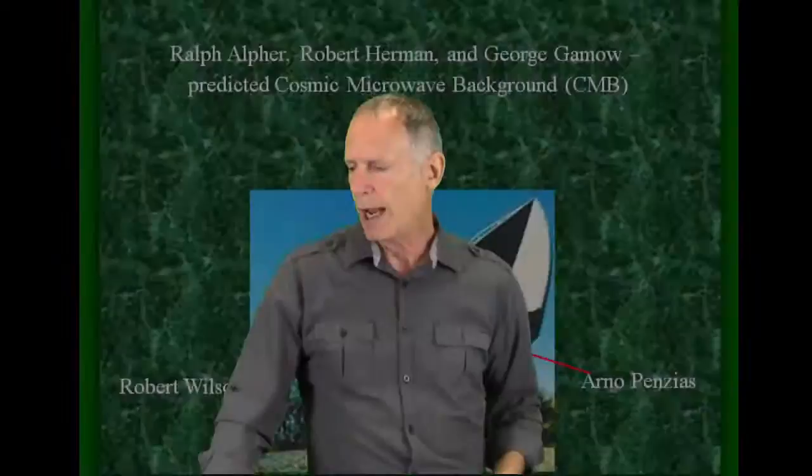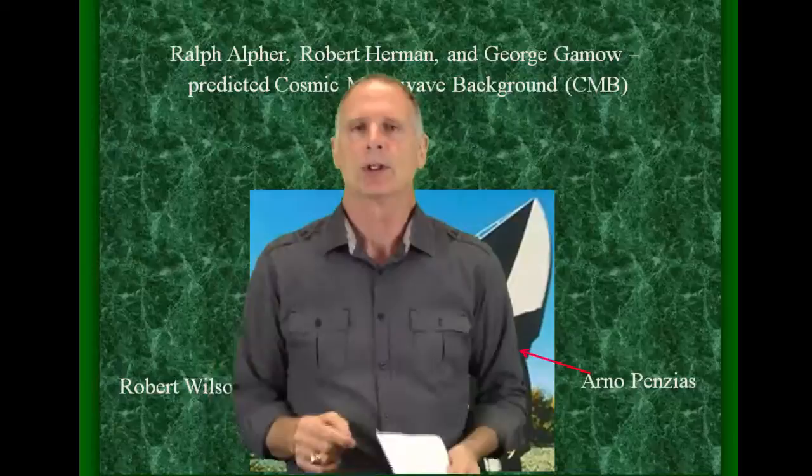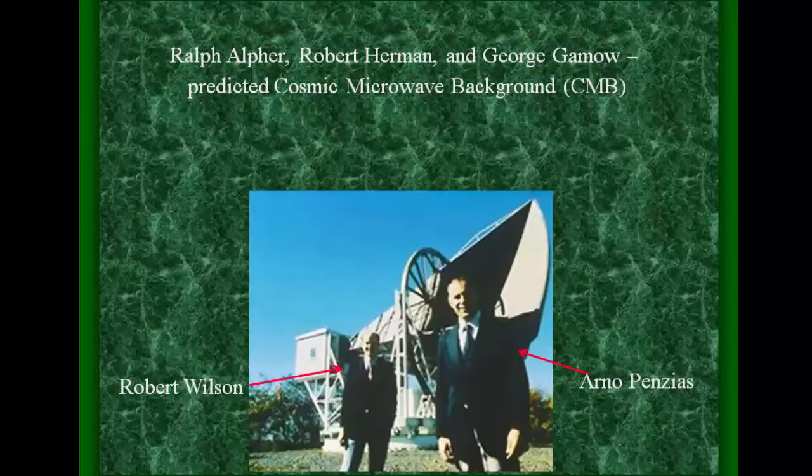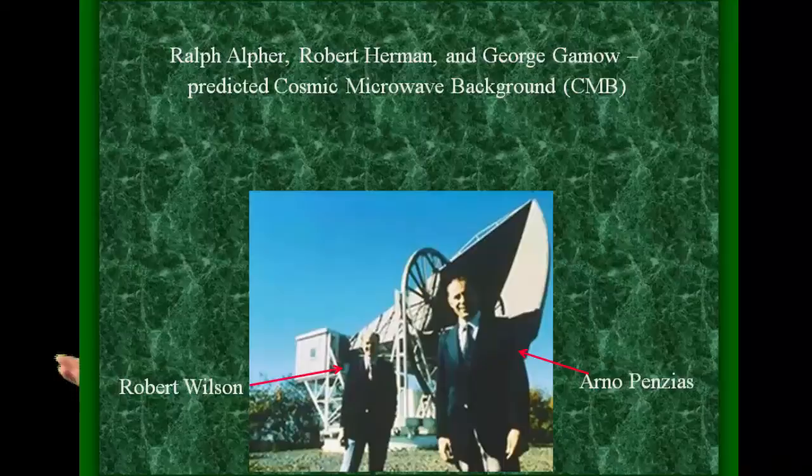Now, if you have all of this material going outward from something that was at almost infinite energy, or maybe it wasn't infinite energy, who knows, no one knows, then some people, Ralph Alpher, Robert Herman, and George Gamow, they predicted that we would have some leftover energy from that cosmic event, and that leftover energy would permeate space.